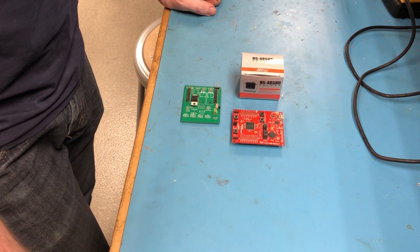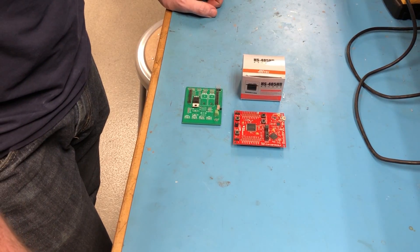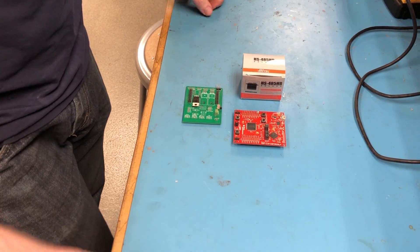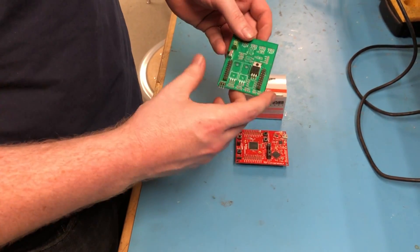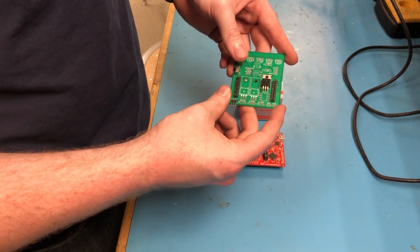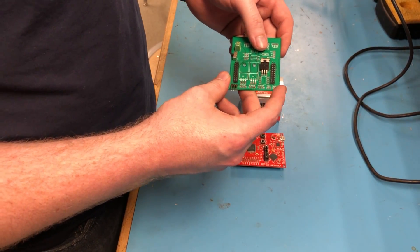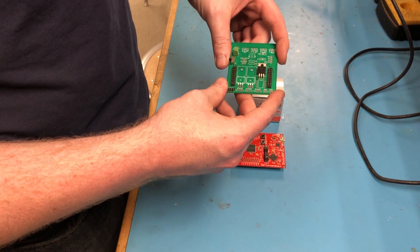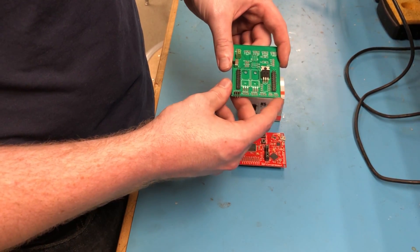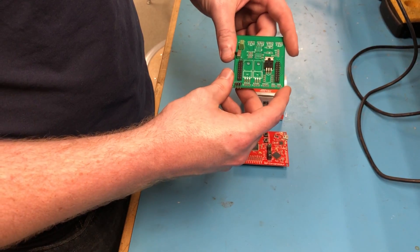Alright, so now we're going to talk about some of the electronics that can be provided to you by the Innovation Lab. This is a little circuit board here that will take the power in from your battery. It has two MOSFETs on it that can control any DC brushed motor. And it has four PWM outputs for servos or motor controllers.